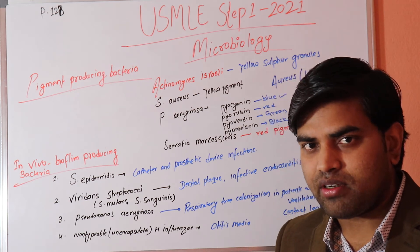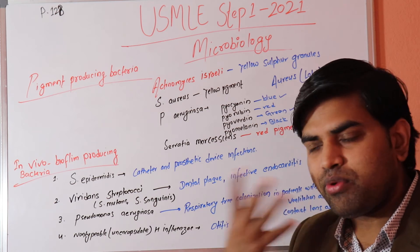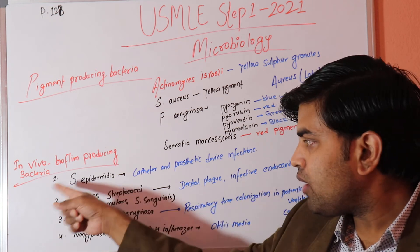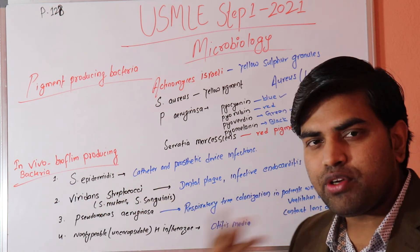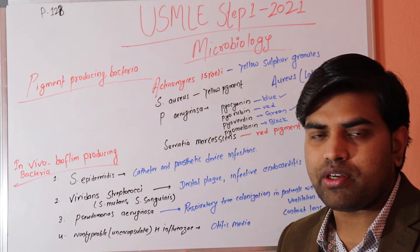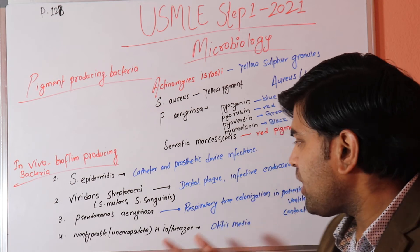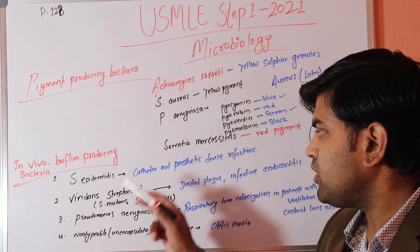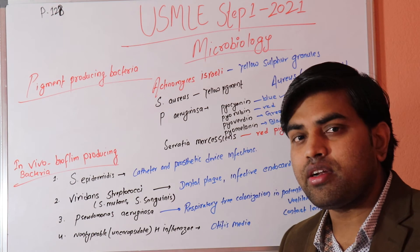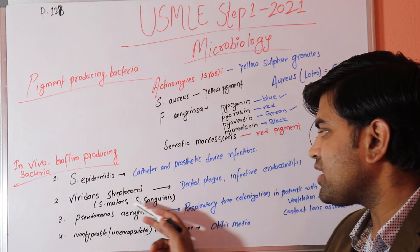Viridans streptococci are normal oral flora and cause very limited infections — essentially only dental infections and infective endocarditis. In both cases, they form biofilm making eradication difficult. Endocarditis requires prolonged treatment; dental plaque may require tooth removal. Remember: Staph epidermidis targets catheters and prosthetics; viridans streptococci target dental plaque and infective endocarditis.